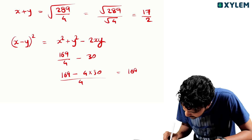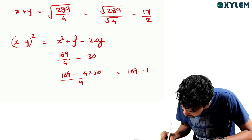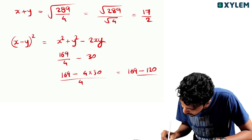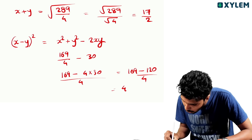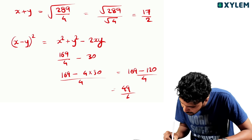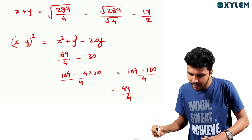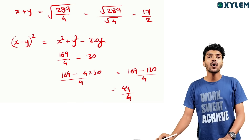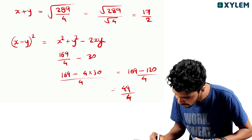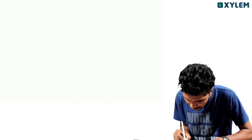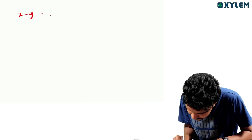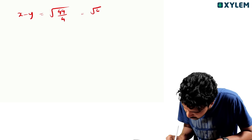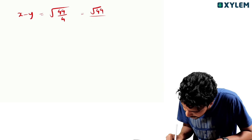That is equal to 169 minus 120 divided by 4, which is equal to 49 by 4. So x minus y is equal to root of 49 by 4.